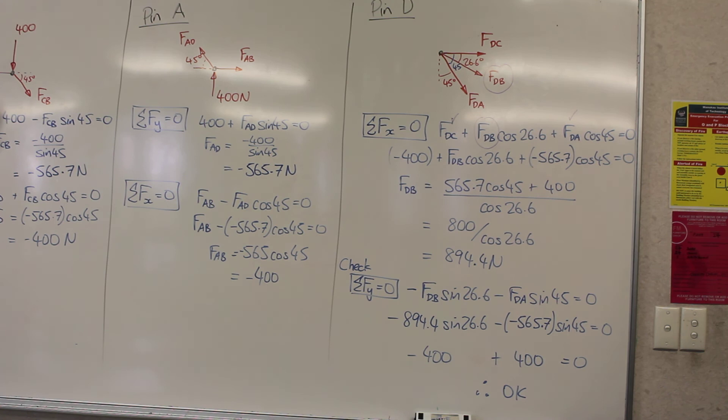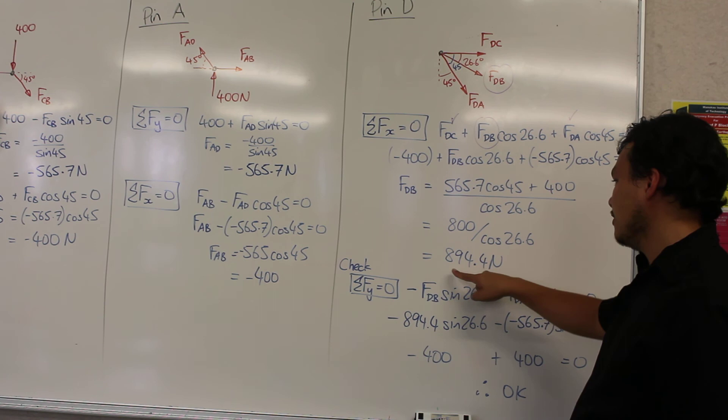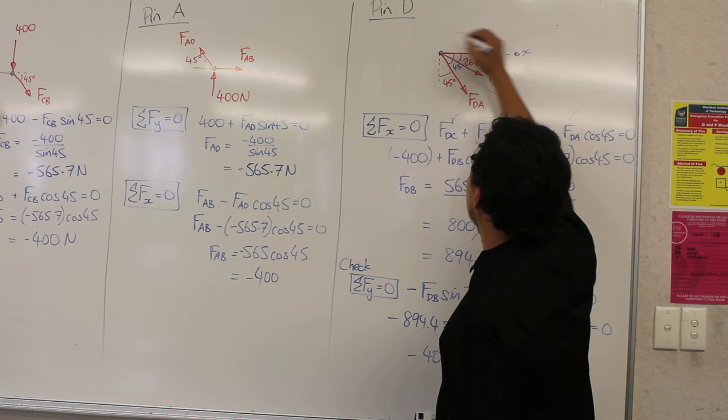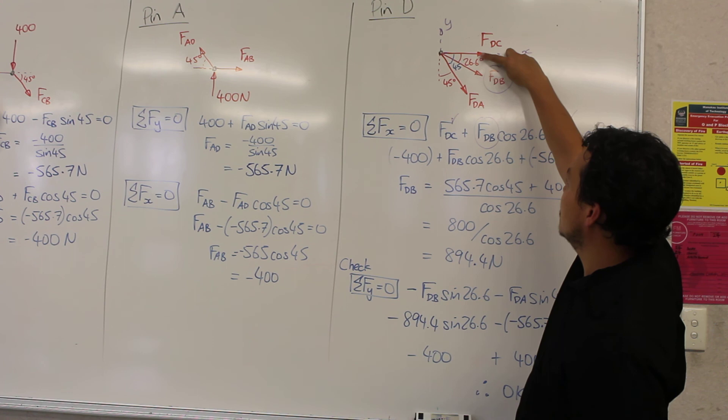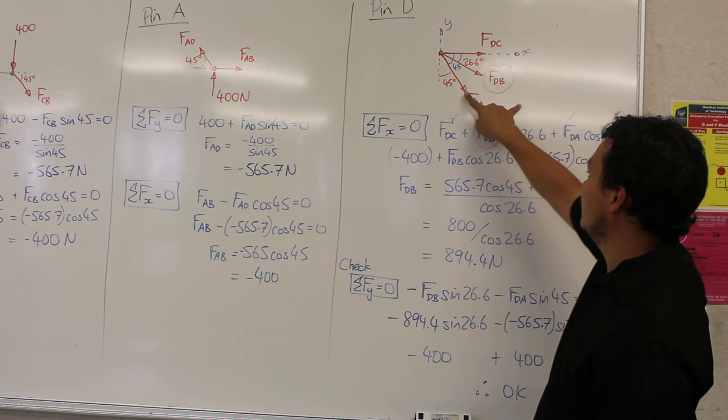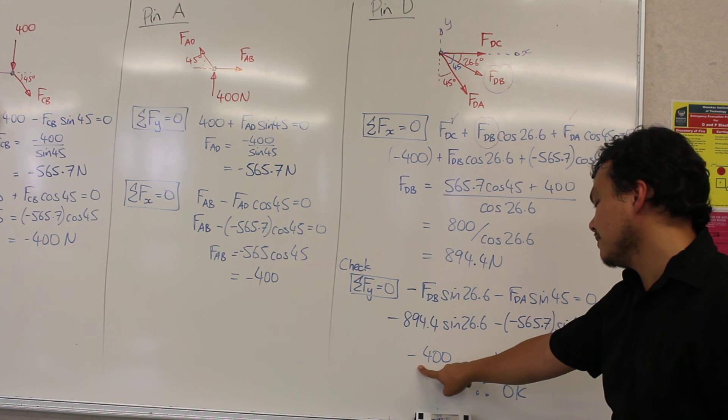Okay, so we can check the value that we have here by taking the value that we got for Fdb and Fda, and substituting it into our summation of forces in the y direction. So we're taking x towards the right, and y going up, and for that we get Fdb times sine 26.6, and then minus Fda sine 45. I'm using this angle here of 45. So Fda sine 45, substitute the values, and both of these, the left-hand side one part gets to minus 400, the right-hand side part gets to 400, and we should see that that is okay.